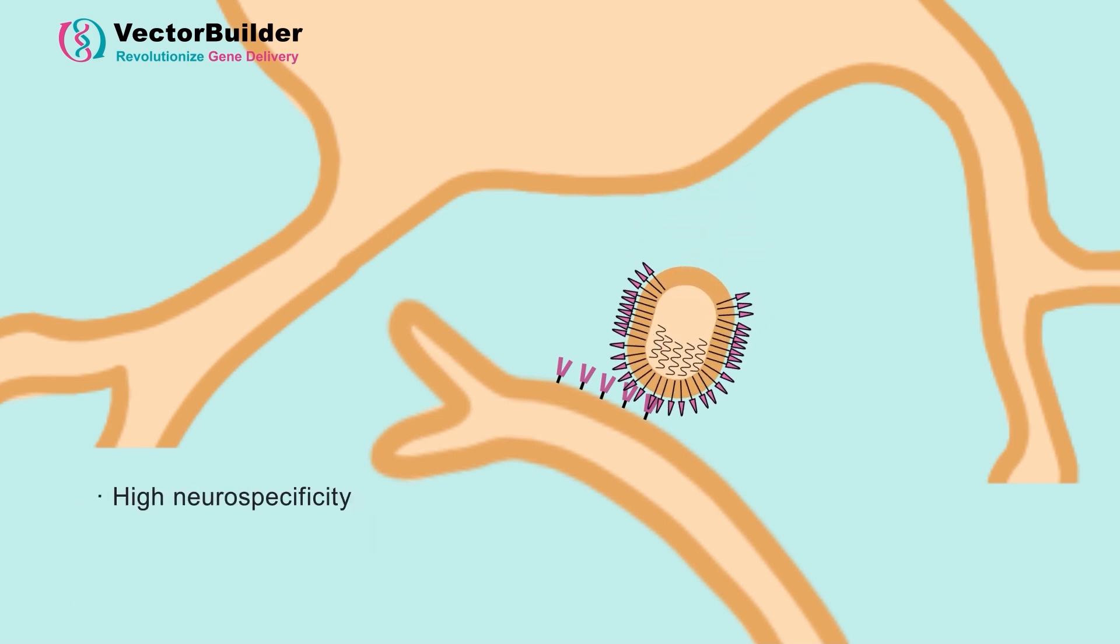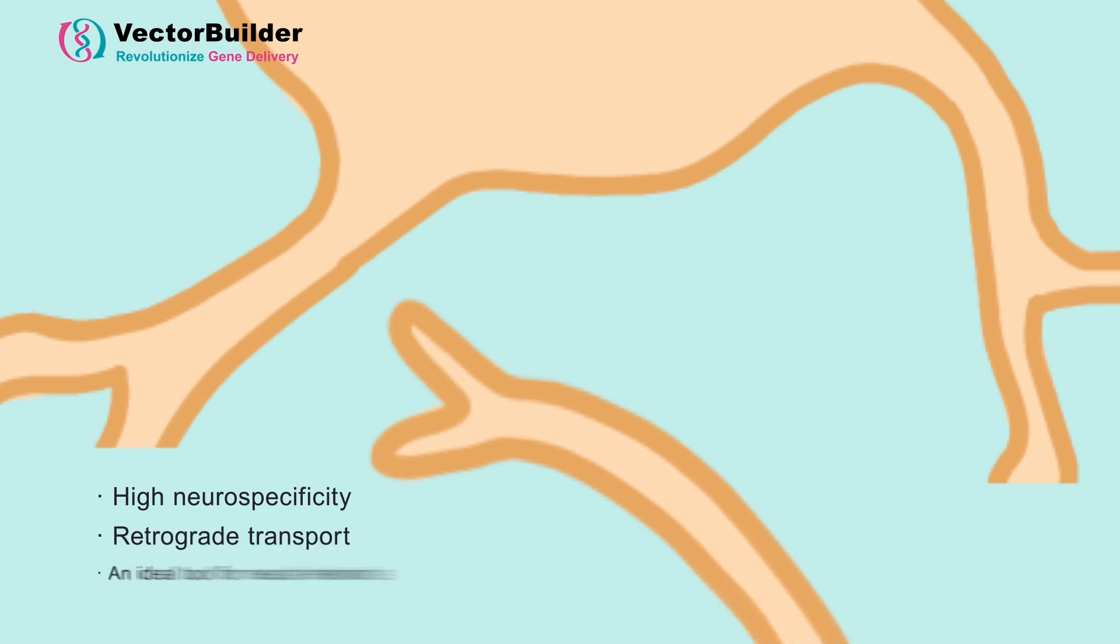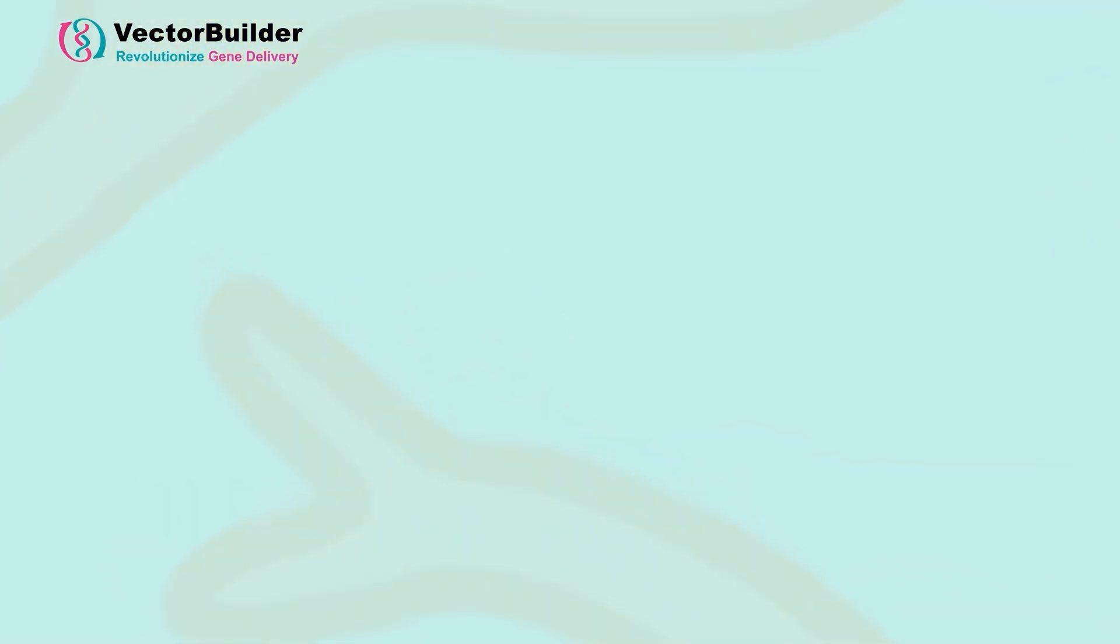The high neurospecificity of rabies virus and its predictable retrograde transport make it an ideal tool for studying neural networks. And this is an area that can be incredibly hard to study.